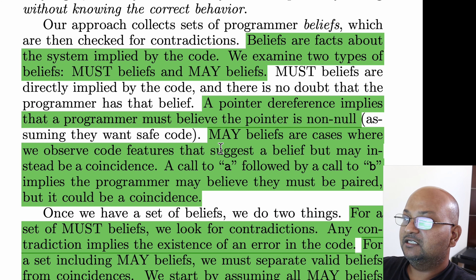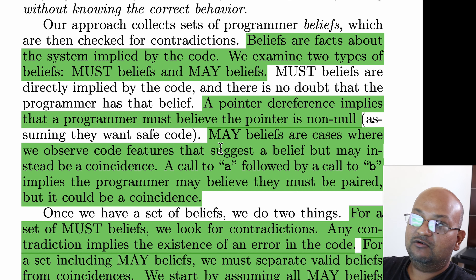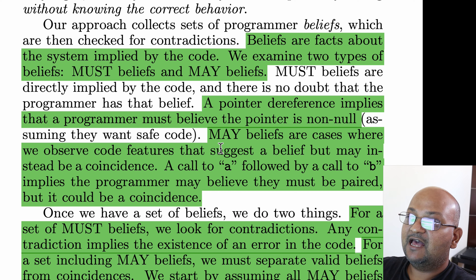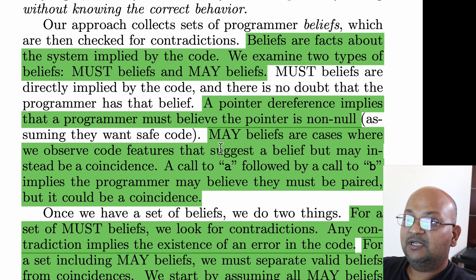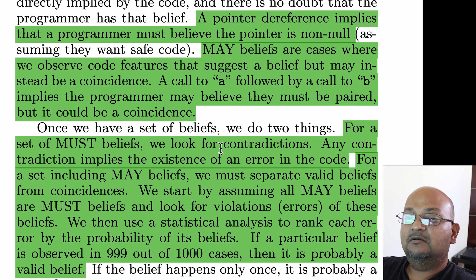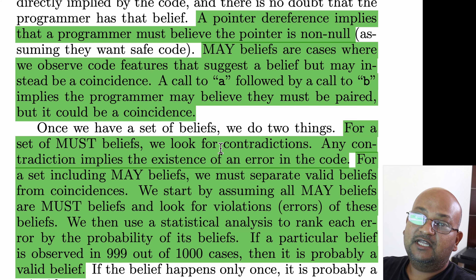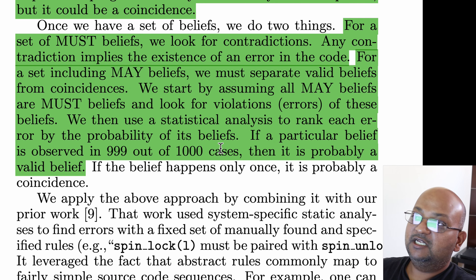The core idea of the system is to extract beliefs from code. Beliefs are simply facts implied by the code that is already written, and you have two types: must beliefs and may beliefs. Must beliefs are things that must always hold true in the code — the most straightforward example is null pointer dereferences. If I write code that follows a pointer, that implies I must believe the pointer is not null. May beliefs are patterns we see in the code base but that may simply be a coincidence — the most common example is the pattern that a call to A must be followed by a call to B.